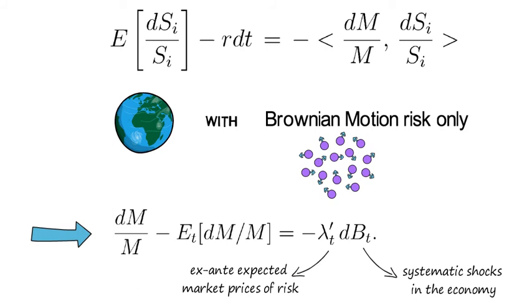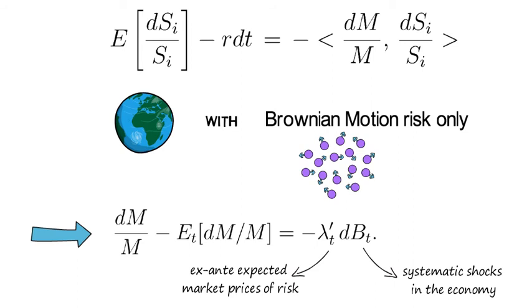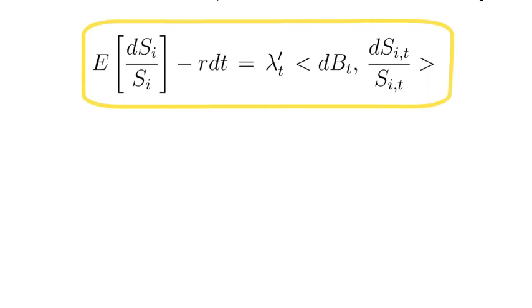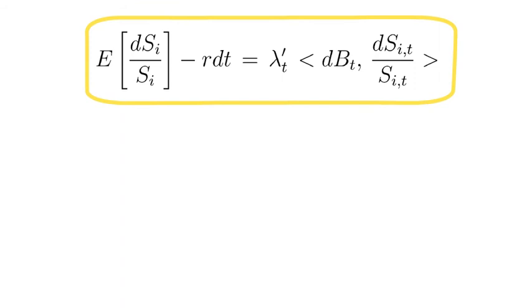So as we plug that relationship to the previous expected risk premium expression, we get that really useful relationship that we wanted to prove. Namely, the conditional expected risk premium for any asset i coincides with the product of expected factor risk premiums times the instantaneous covariation of asset i's return with the economy's systematic sources of risk.